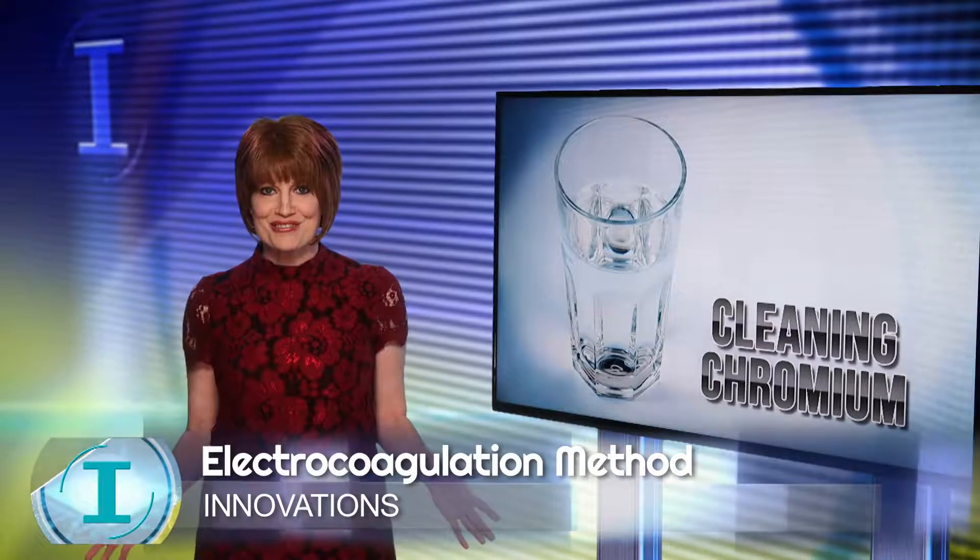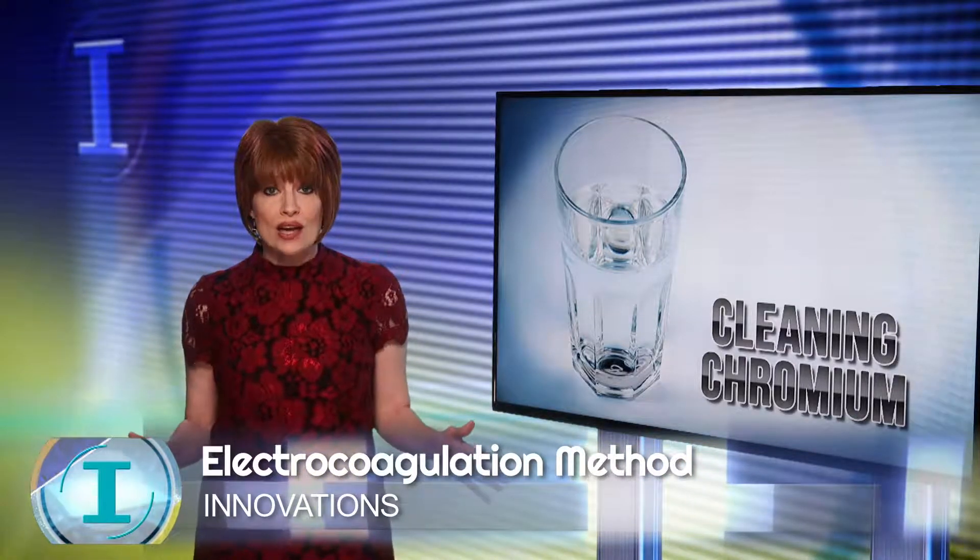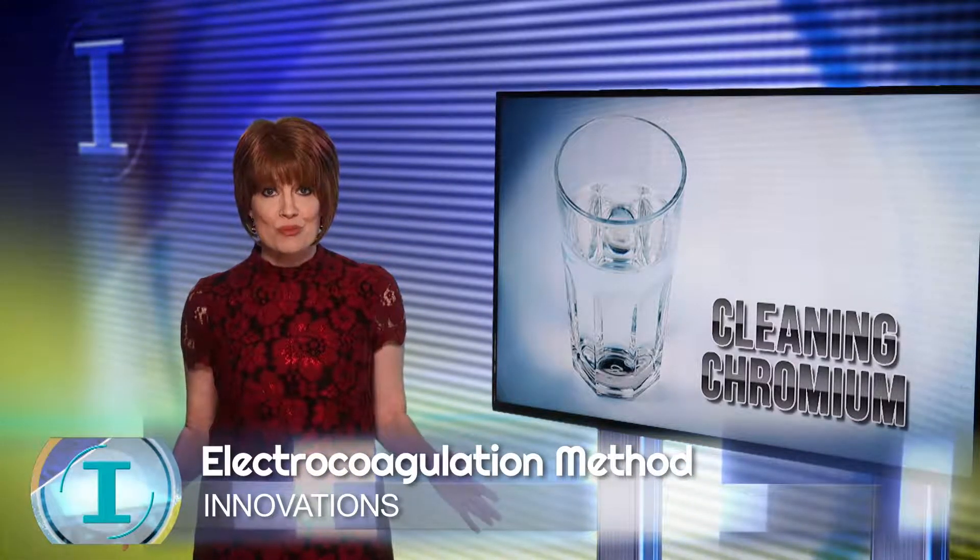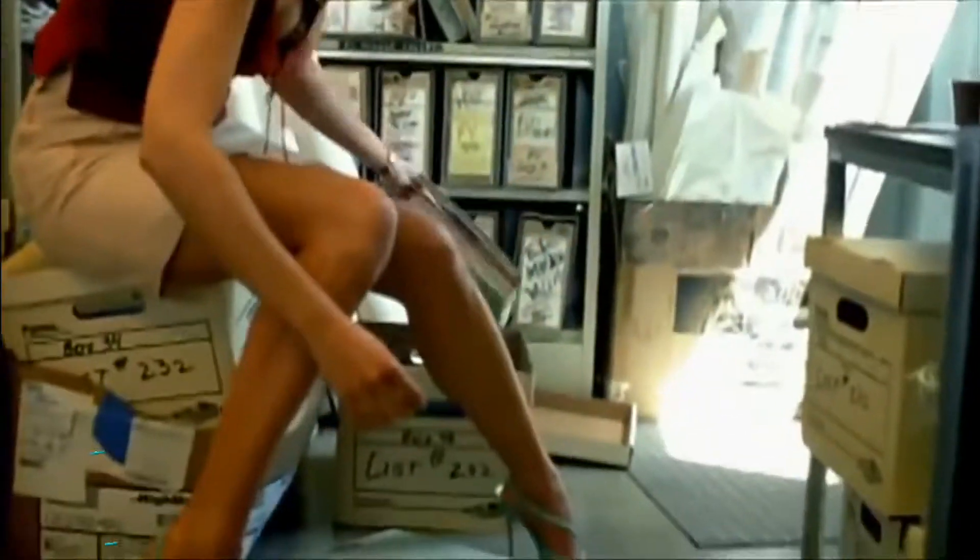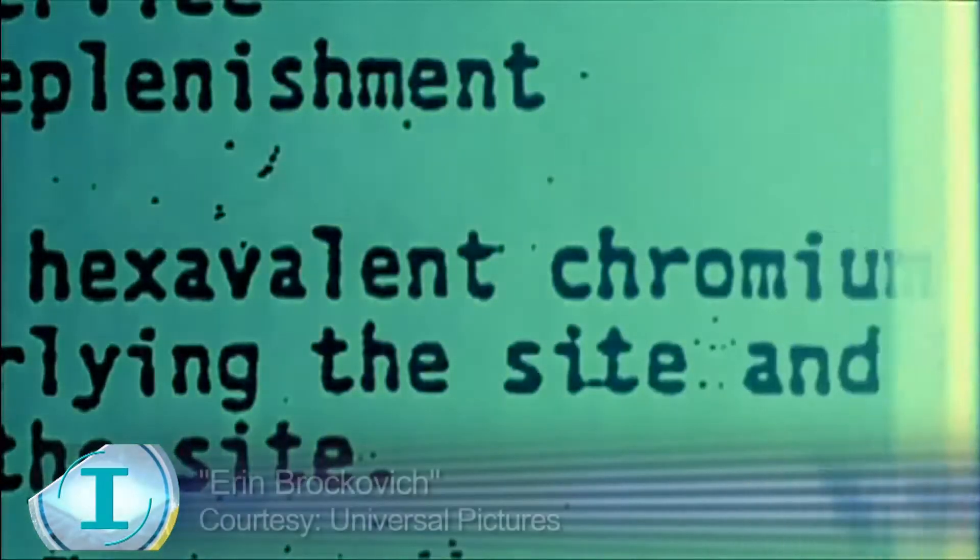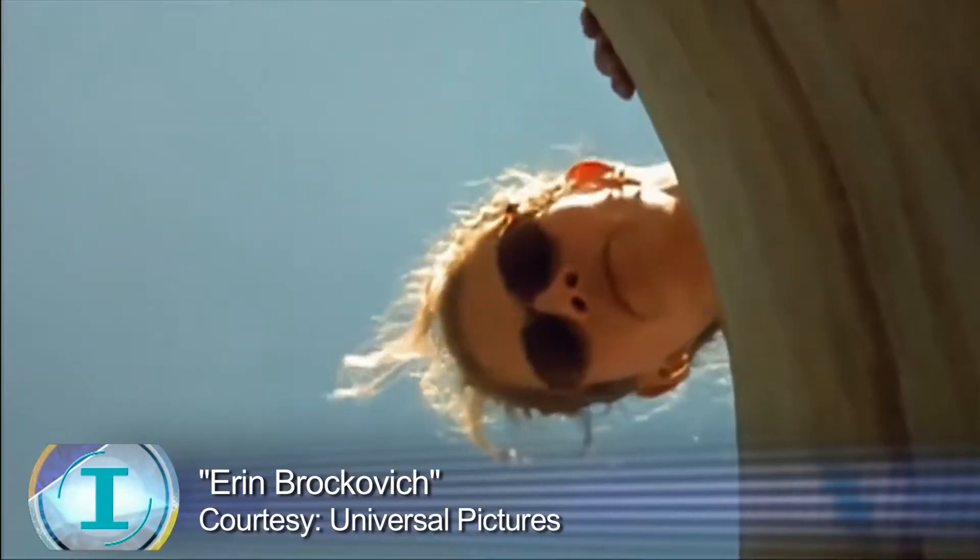Now researchers at Washington University have found a new way to clean the dangerous chromium from drinking water. Hexavalent chromium can be very harmful. It kills people. Chromium 6 is a toxic form of chromium that you'll find in water. It is a known carcinogen, and so we are concerned about its health effects.